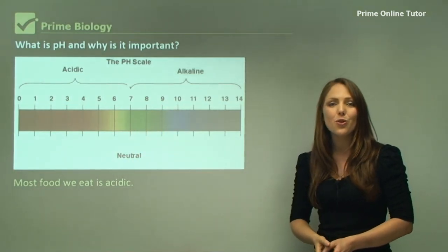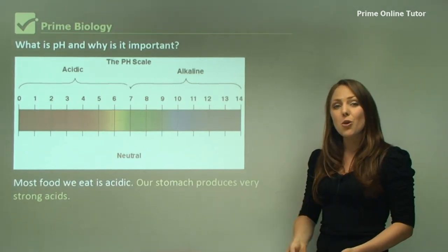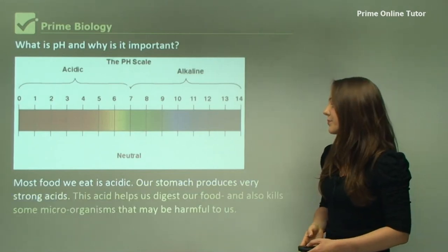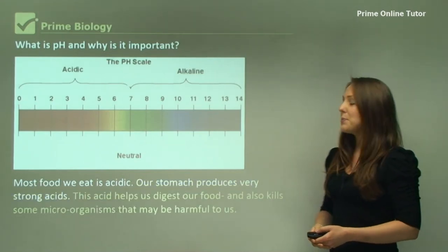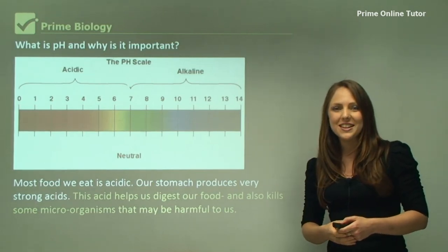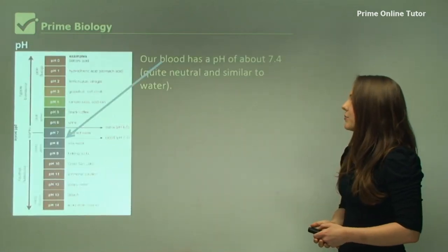Seven is neutral, so a pH of seven is neutral and generally that's the pH of water. Our stomach produces very strong acids. That acid actually helps start to digest our foods. This acid helps us to digest but also it kills harmful microorganisms that we eat from our food.